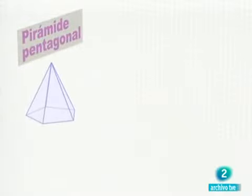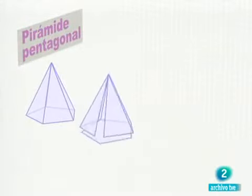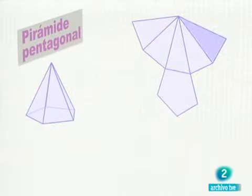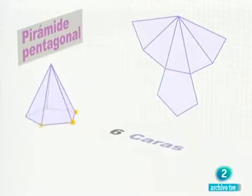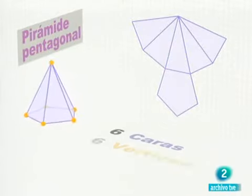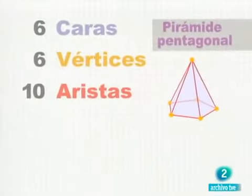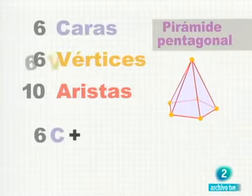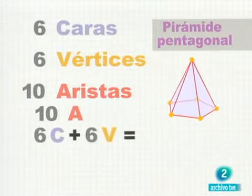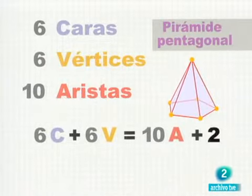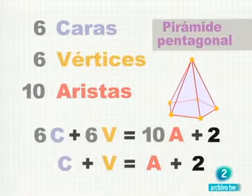Veamos qué ocurre con esta pirámide. Caras, cinco laterales y una base, seis en total. Vértices, cinco abajo y uno arriba, otro seis. Aristas, cinco laterales y cinco en la base, diez en total. Vaya, otra vez, las caras más los vértices es igual al número de aristas más dos.